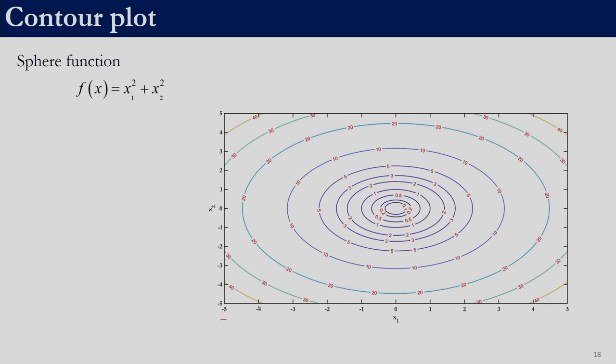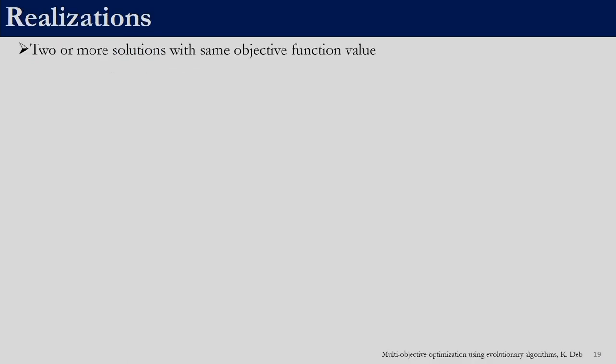Our search space is x_1 from −5 to 5 and x_2 from −5 to 5. In this region, all points on one contour have an objective value of 20, all points on another contour have a value of 5. We will be referring to contour plots very often. Realizations are solutions which have the same objective function value but different decision variable values — for example, two different flights with the same cost, or in a 2-variable problem two different (x_1, x_2) pairs giving the same objective value.